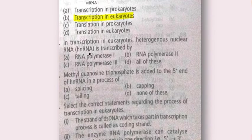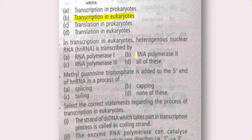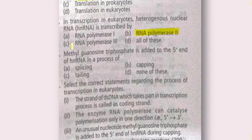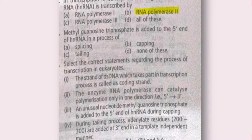Next question: heterogeneous nuclear RNA (hnRNA) is transcribed by RNA polymerase I, RNA polymerase III, RNA polymerase II, or all of these? As we know, there is a clear division of labour in eukaryotes unlike prokaryotes. RNA polymerase II is responsible for transcription — it transcribes the heterogeneous RNA present in the nucleus, which then needs to be processed.